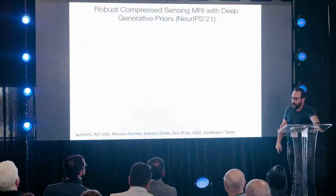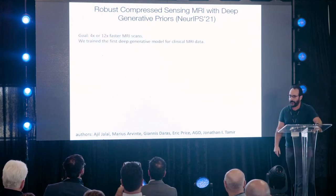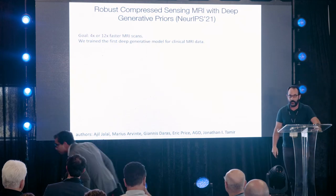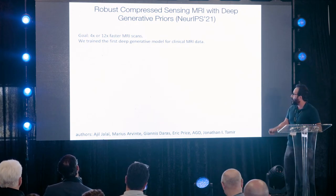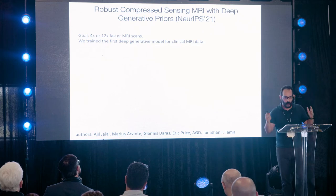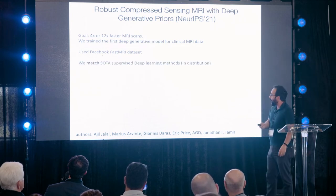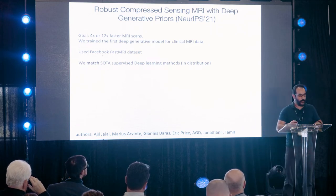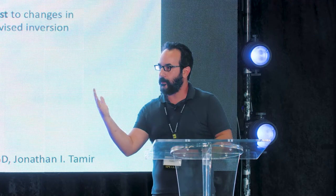We're applying these techniques for MRI to accelerate scanning. A 4x or 12x faster MRI lets you scan four to ten times more people, reduces cost, and allows scanning babies who can't stay still in the scanner for 10 to 15 minutes. We trained the first deep generative model for MRI images using a large public dataset — it took months. We matched the state-of-the-art performance of supervised methods in-distribution, but more importantly we're robust to changes in scanner calibration or anatomy. We trained on brains and used the model to reconstruct MRI images of knees.